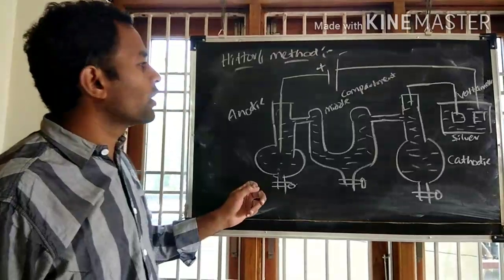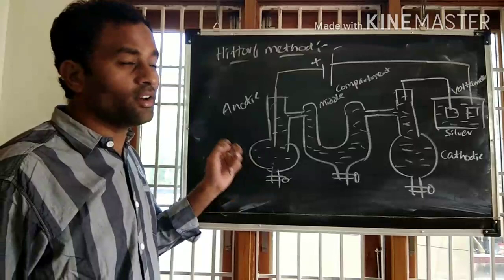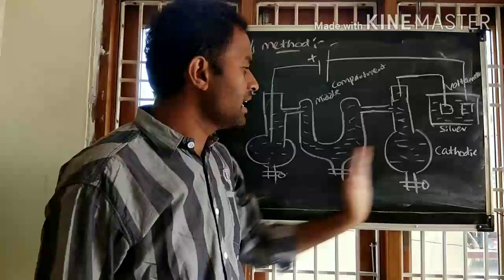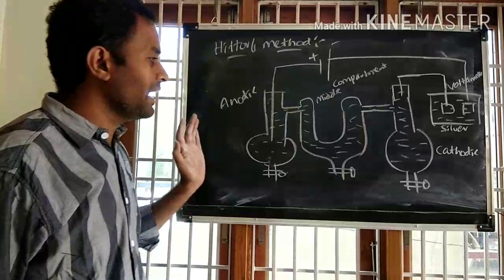We are going to determine the transport number of an ion, either cation or anion, using the Hittorf method, which is a commonly used method for determining the transport number. According to Hittorf, he used a specific device to calculate and determine the transport number experimentally.